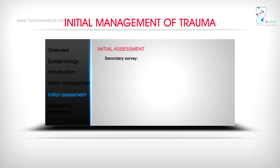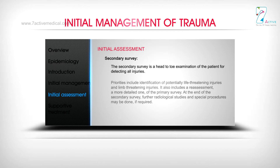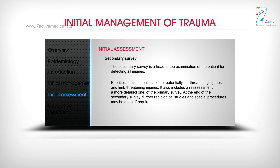The secondary survey is a head-to-toe examination of the patient for detecting all injuries. Priorities include identification of potentially life-threatening injuries and limb-threatening injuries. It also includes a more detailed reassessment of the primary survey. At the end of the secondary survey, further radiological studies and special procedures may be done if required.